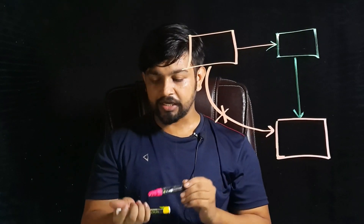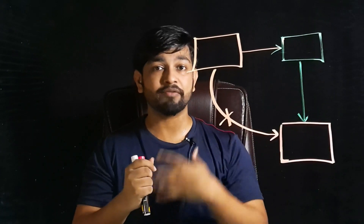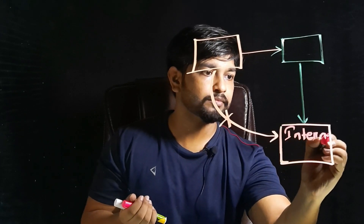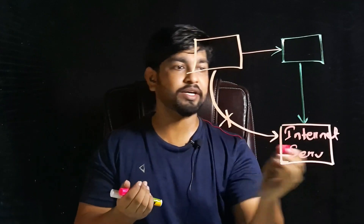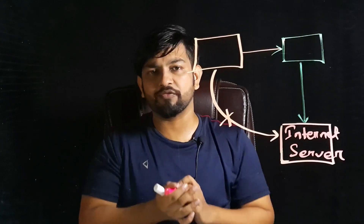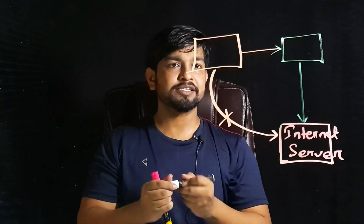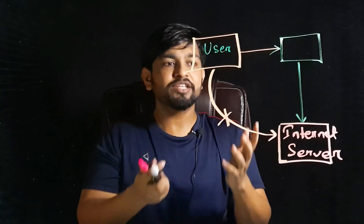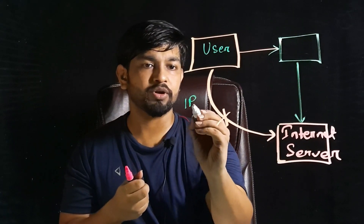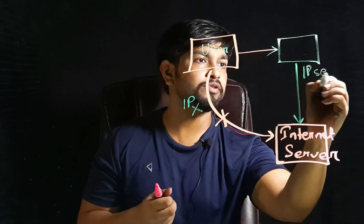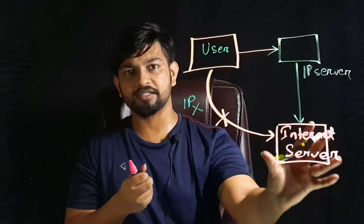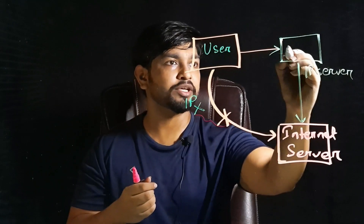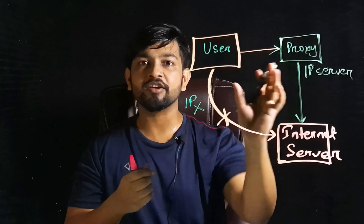Similarly, in the IT world we have a server known as a proxy server. The same concept applies. You have an internet server — for example, facebook.com — and you have your system as the user trying to connect. Instead of giving your own IP address, you use the IP address of the proxy server. So you are masking your IP address with the IP of the proxy server, which adds a layer of protection to your private or personal system.